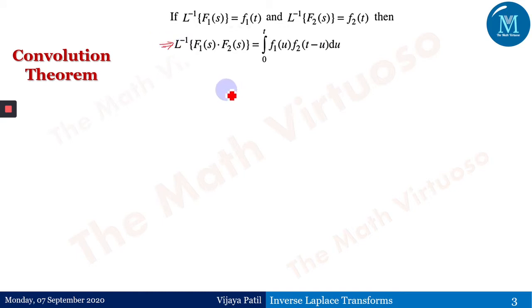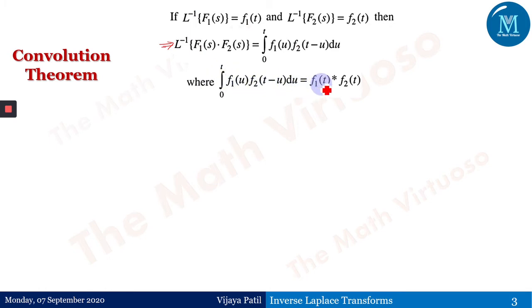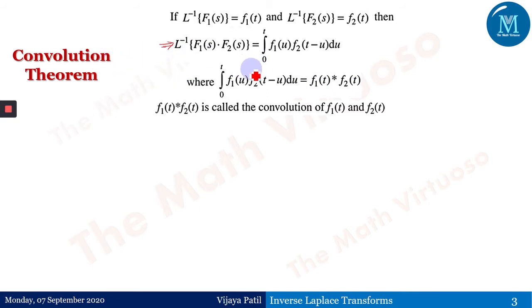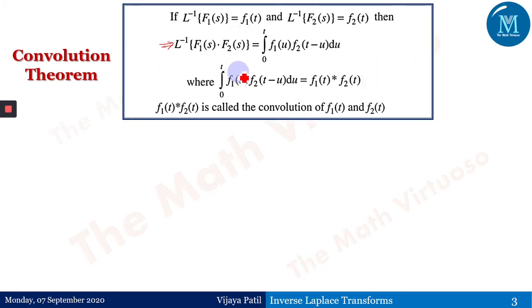The integral from 0 to t of f1(u)·f2(t−u) du is written as f1(t) ★ f2(t), and is known as the convolution of f1(t) and f2(t). That is why this theorem is known as the convolution theorem for inverse Laplace transforms.